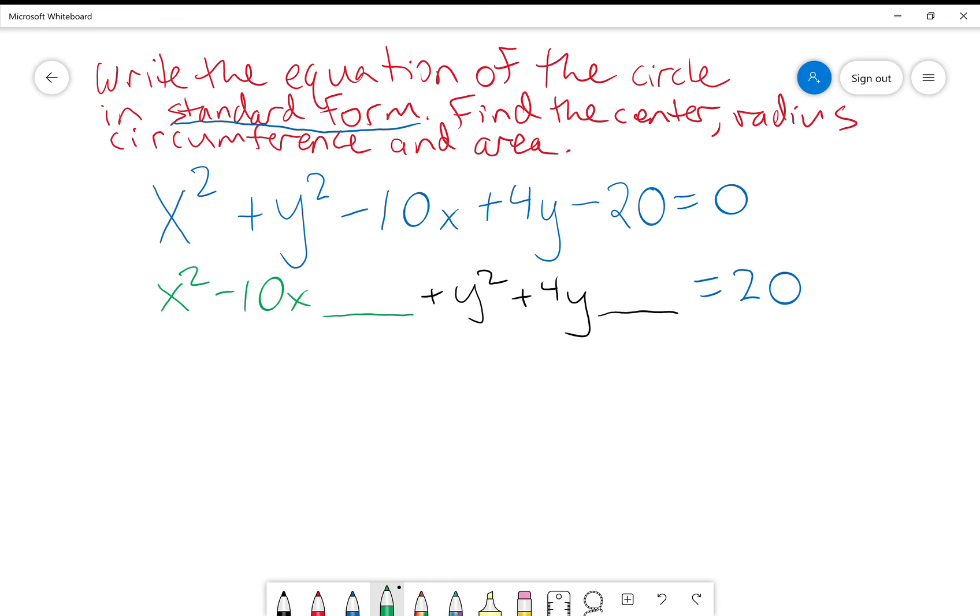Now, I want to go with completing the square. So I'm going to take the b value, the coefficient in front of the x, negative 10 over 2, and square it. Well, that's going to be negative 5 squared is 25.